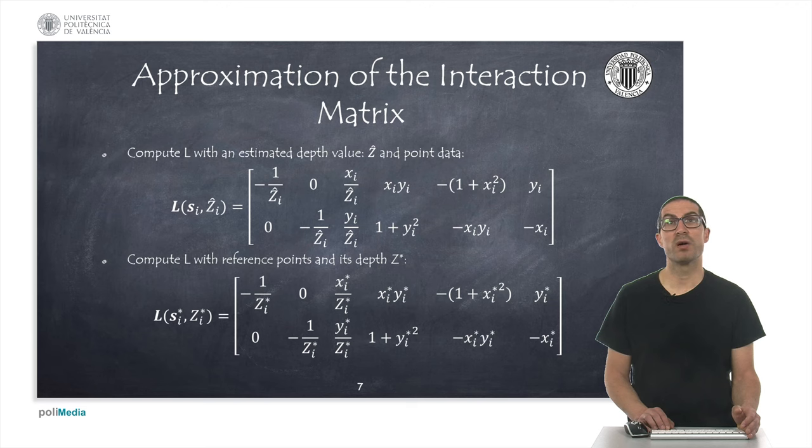In the first one, the observed coordinates of the image and depth estimation of those points is considered. In the second scenario, the coordinates of the reference points and their depth are considered instead. The second approximation has the advantage that the interaction matrix is constant, as long as the reference point remains unchanged. However, a frequently used approximation is to use the mean of both.